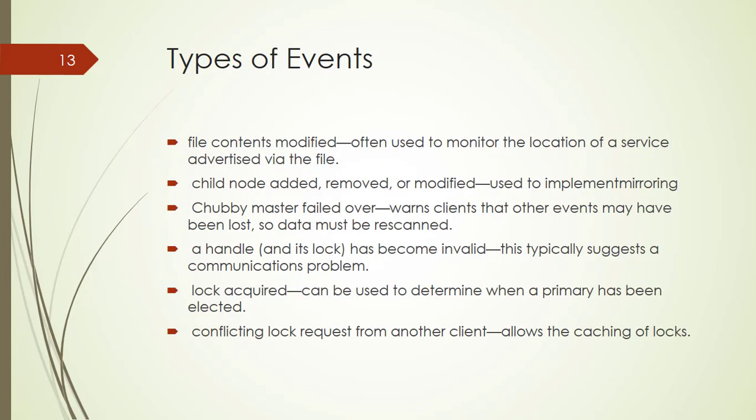There are mainly five types of events. The first is file contents modified, often used to monitor the location of a service advertised via the file. The second is Chubby master failover — it signals to clients that other events may have been lost and data must be rescanned. The third is handle has become invalid, which typically suggests a communication problem. The fourth is lock acquired, which can be used to determine when a primary has been elected. The fifth is conflicting lock request from another client, which allows Chubby to cache locks. The last two events are very rarely used.